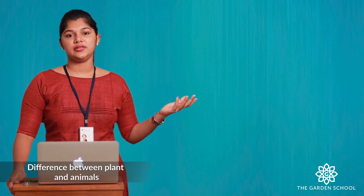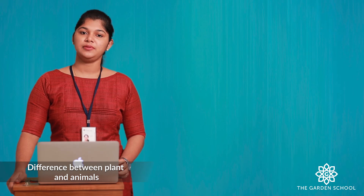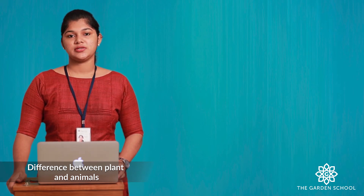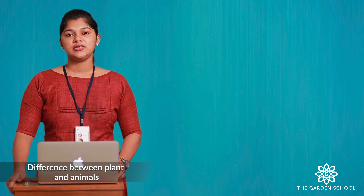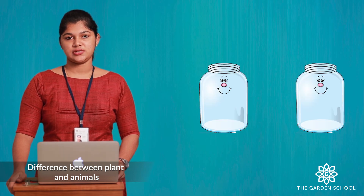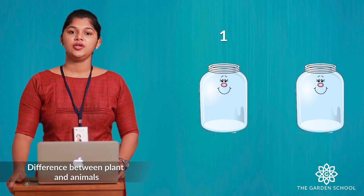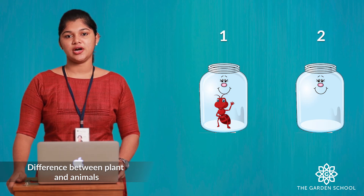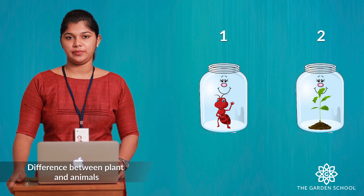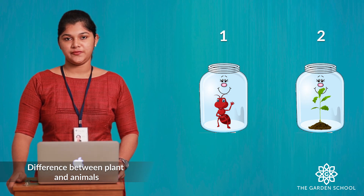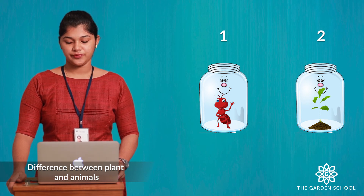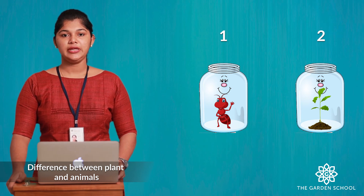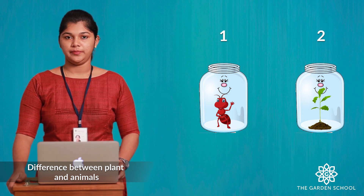These are the major differences between the plants and animals. Now let's do an experiment. Take two transparent jars. In the first jar you can keep an ant or caterpillar. In the second jar you can keep a growing sapling. Just find the difference and observe the behavior like movement, feeding habit, and body parts.